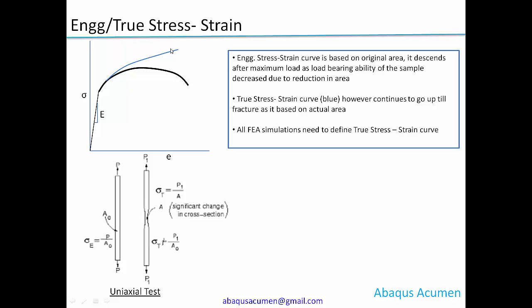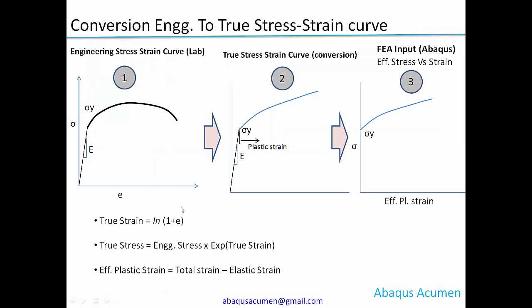Coming back to the formulas: to calculate the true stress-strain curve, the first step is to calculate the true strain. The formula is: true strain equals natural log of (1 + e), where e is the engineering strain. Once we calculate the true strain, we calculate the true stress: true stress equals engineering stress multiplied by the exponential of true strain.